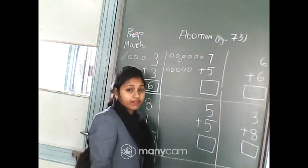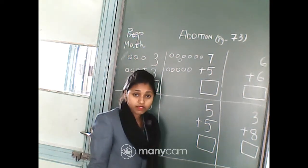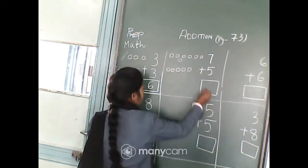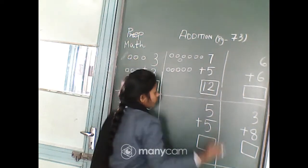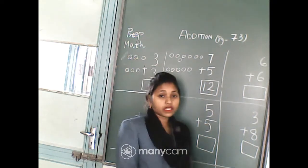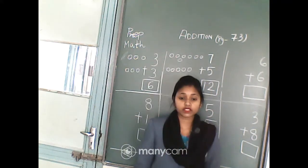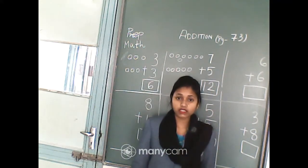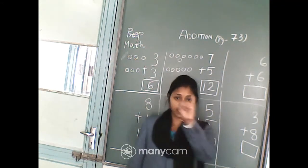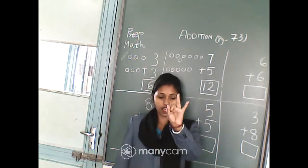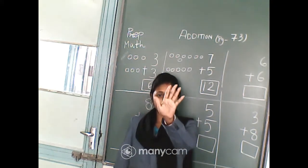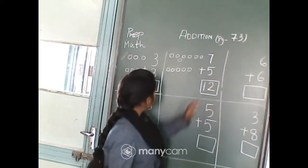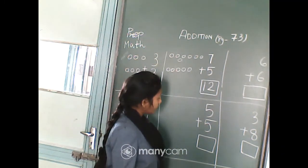So 7 plus 5 equals 12. We will count after 7 till 5 digits: 7, 8, 9, 10, 11, 12. So 7 plus 5 equals 12.